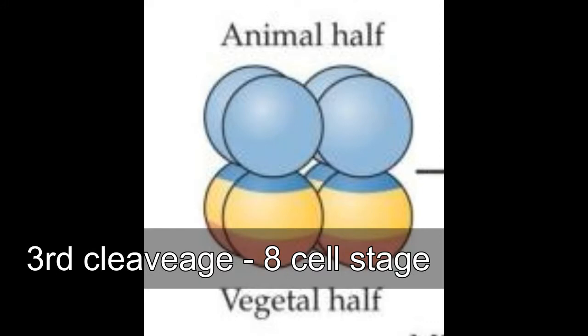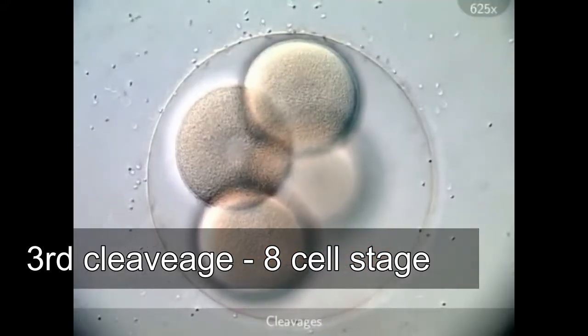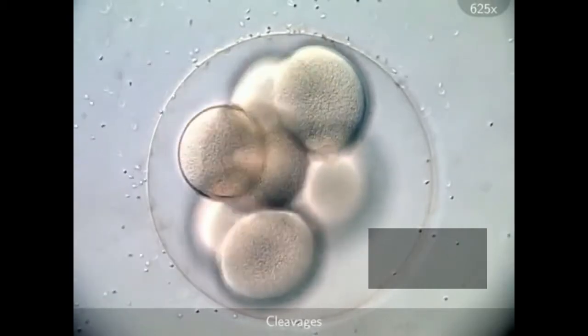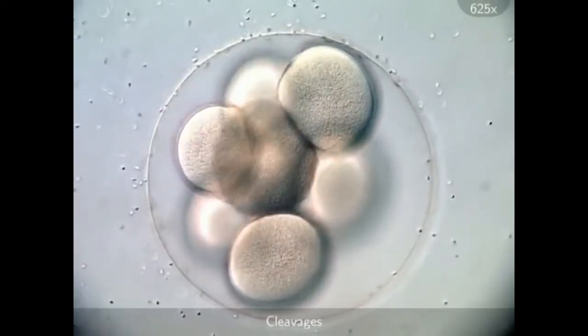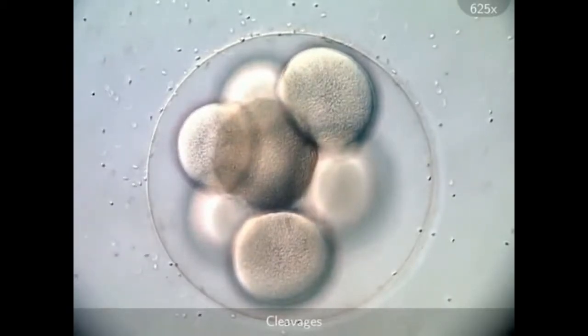Experiments reveal that individual blastomeres are no longer equivalent at the eight-cell stage and that isolated blastomeres can no longer form an entire larva or parts of the larva. Cleavage becomes irregular after the third division occurs.